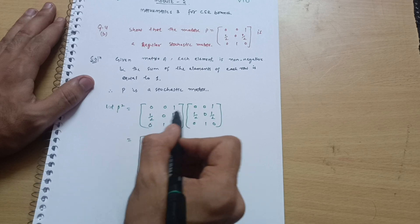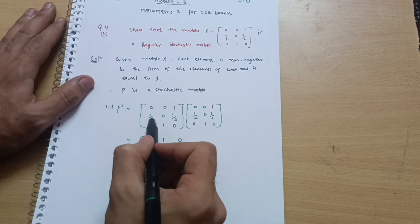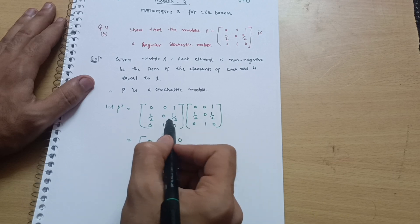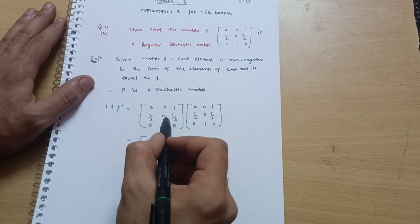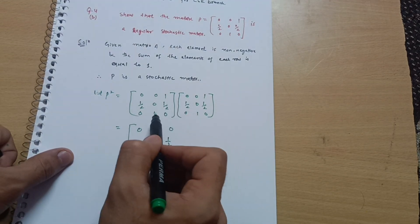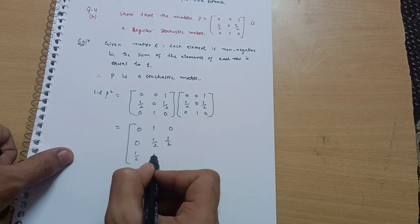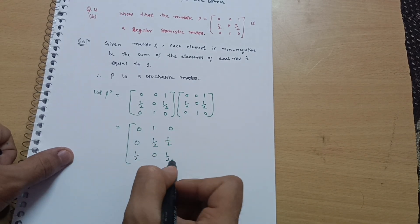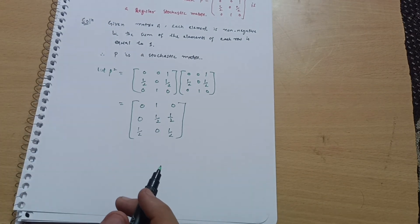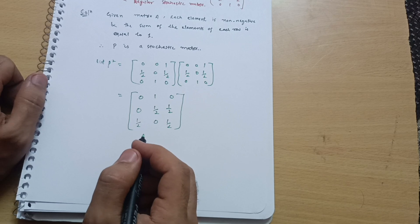Second row of P²: first column = 1/2×0 + 0×(1/2) + 1/2×0 = 0; second column = 1/2×0 + 0×0 + 1/2×1 = 1/2; third column = 1/2×1 + 0×(1/2) + 1/2×0 = 1/2. So second row is [0, 1/2, 1/2]. Third row: first column = 0×0 + 1×(1/2) + 0×0 = 1/2; second column = 0×0 + 1×0 + 0×1 = 0; third column = 0×1 + 1×(1/2) + 0×0 = 1/2. Third row is [1/2, 0, 1/2]. So P² = [[0,1,0],[0,1/2,1/2],[1/2,0,1/2]].